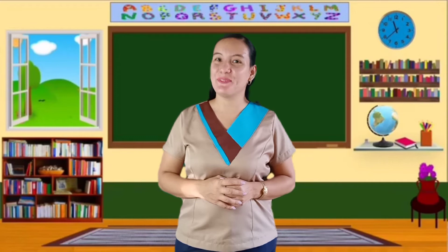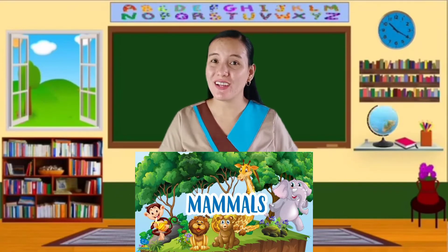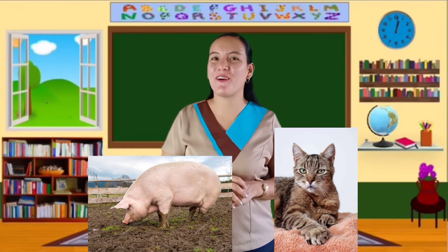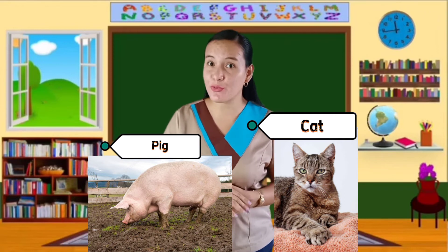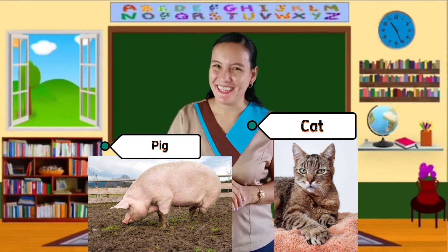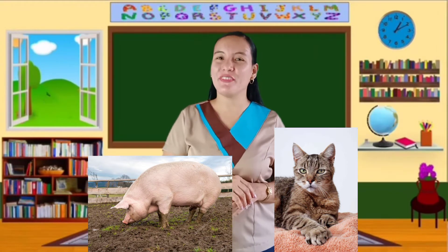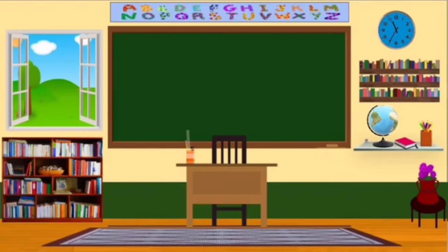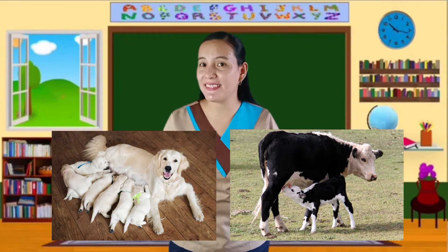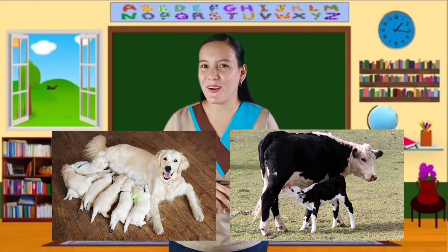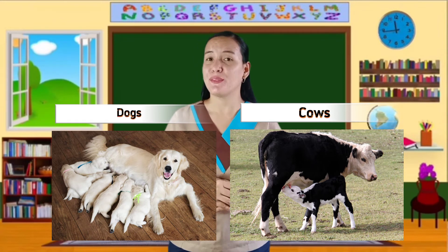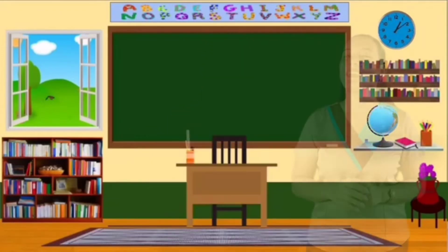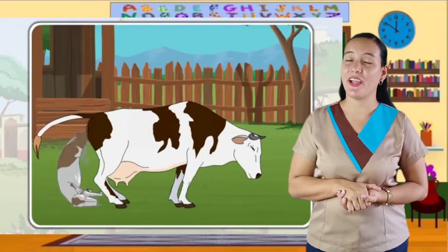To complete the list, we have mammals. Class, what are these animals? Yes, these animals are cat and pig. Will you describe their body covering? Impressive — they have hair and fur on their body. Do you know these animals? Yes, these are cows and dogs. These are also mammals. How do you think mammals are born? Yes, mammals give birth to their young alive.